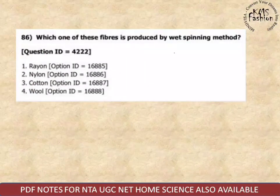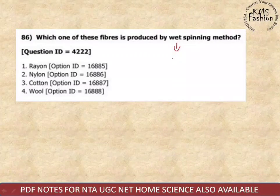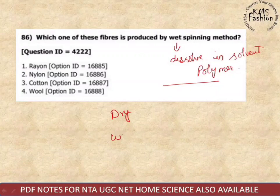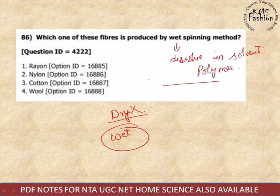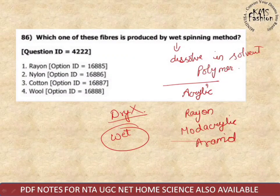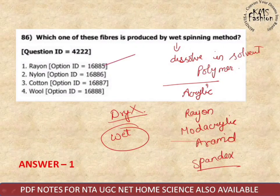Next question: which fiber is produced by the wet spinning method? Wet spinning means we need to dissolve the polymer in a solvent. In dry spinning, no dissolving is needed, but in wet spinning, dissolving is required. The fabrics made with wet spinning include rayon, so the answer here is rayon.